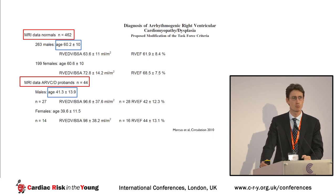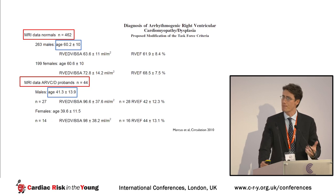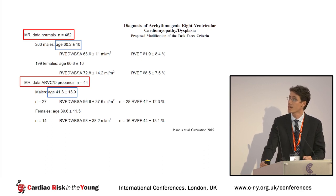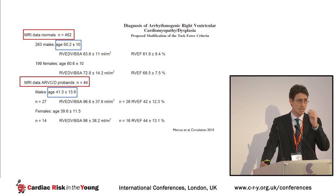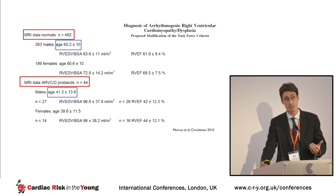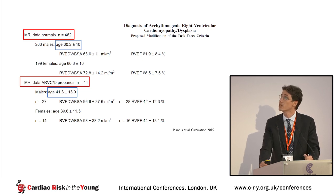How were these numbers derived? If we want to believe in something we have to understand the underlying data. These data are in the supplementary material of the Task Force Criteria and derive from a comparison of 462 apparently healthy individuals from the MESA study in the United States and 44 patients with ARVC from a multicentric experience. A key limitation is that the healthy cohort is more than 10 times larger than the ARVC cohort. Additionally, the average age of the healthy individuals was 60 while the average age of ARVC patients was 40.